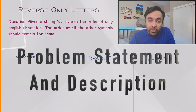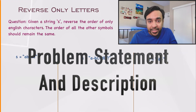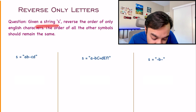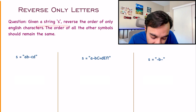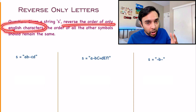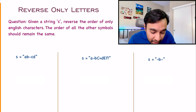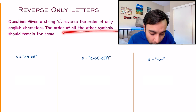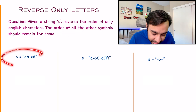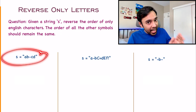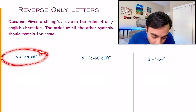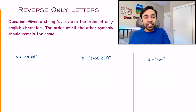First of all, we need to make sure that we are understanding this problem statement correctly. In this problem, you are given a string S and you have to reverse the order of only English characters. It means that the order of all other symbols should remain the same. Let us look at our first test case. You can see that I have some English alphabets A, B, C and D and also this other character as well.